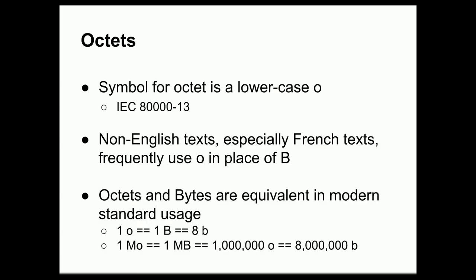Aside from networking texts, lowercase o in place of uppercase B, in other words octet in place of byte, is used in non-English speaking countries and in non-English texts, especially French texts. So you'll often see things like 1 MO or 1 GO, and that's simply the equivalent of one megabyte or one gigabyte. It's just mega octet or giga octet, but they mean the same thing because octets and bytes are equivalent in modern usage.